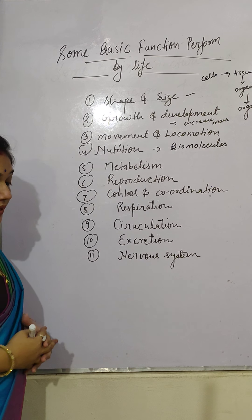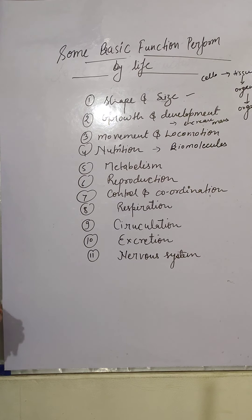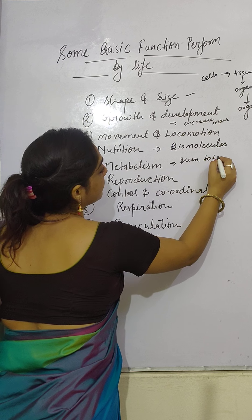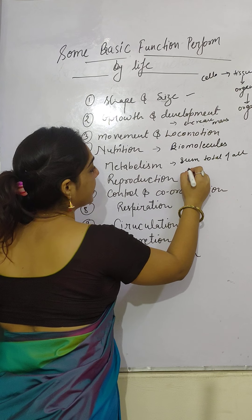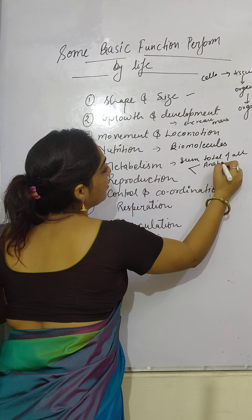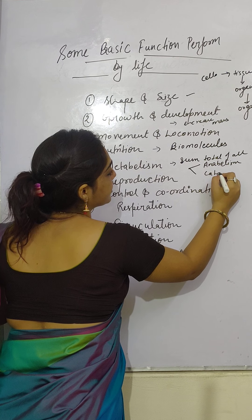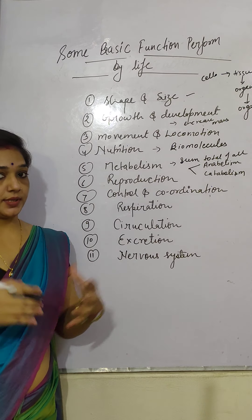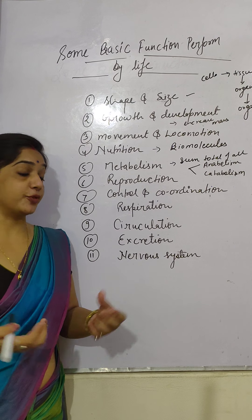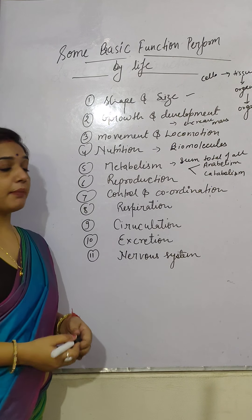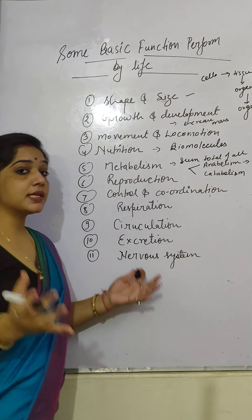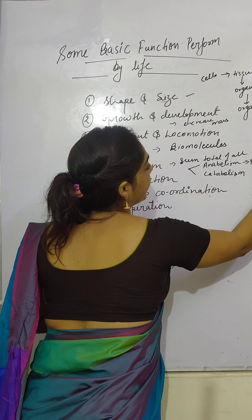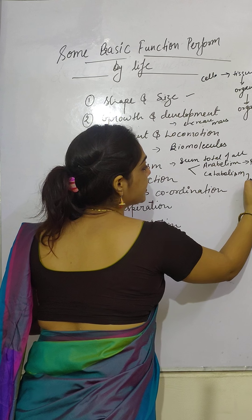Next is metabolism. Metabolism is basically the sum total of all chemical reactions. It has two processes: anabolism and catabolism. Anabolism is basically the constructive process, and catabolism is the destructive process. A very common example of anabolism is photosynthesis, and an example of catabolism is respiration.